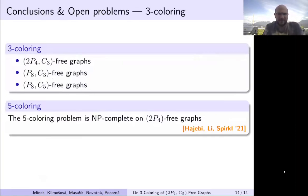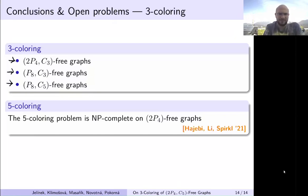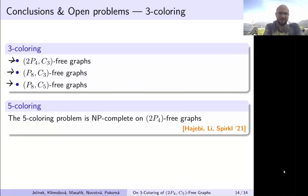Let me stop the proof here — the rest is in detail in the paper. To conclude with open problems: in terms of three-colorings, the three smallest unknown classes containing 2P4 or P8 are: (2P4, triangle)-free, (P8, triangle)-free, and (P8, C5)-free. Very recently — just months ago — it was shown that five-coloring is NP-complete on (2P4+P3)-free graphs. So potentially four-coloring could be interesting on those graphs, but we are not there yet. We don't even know if it is polynomial or not. Thank you for your attention.